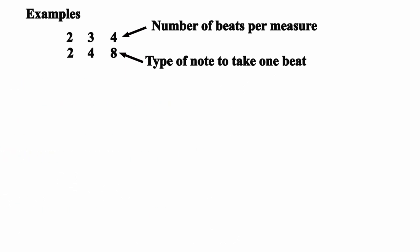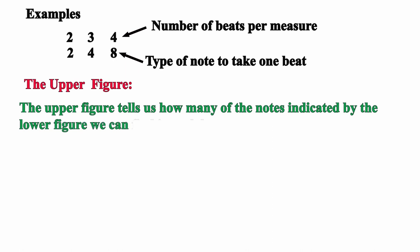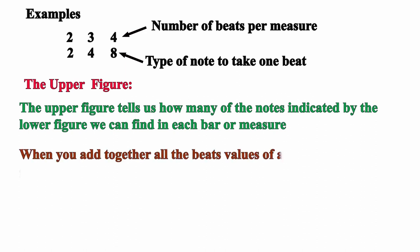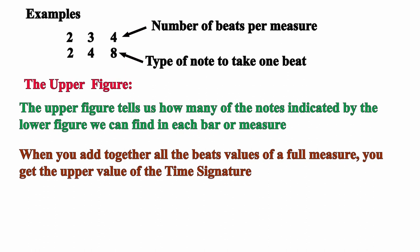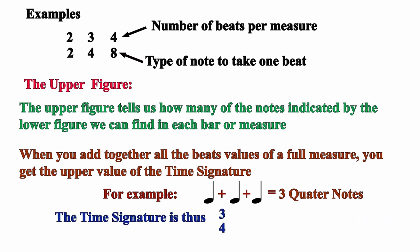What about the upper figure? The upper figure tells us how many of the notes indicated by the lower figure we can find in each bar or measure. When you add together all the beat values of a full measure, you get the time signature. For example, if you find 3 quarter notes in a bar, the time signature is 3 4.